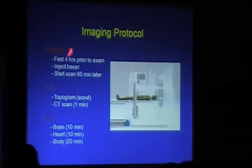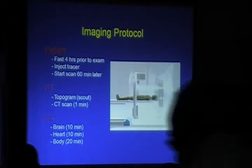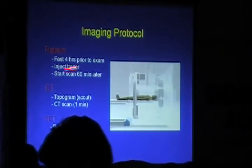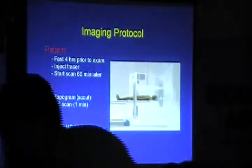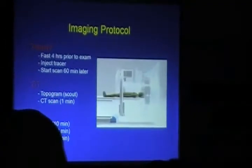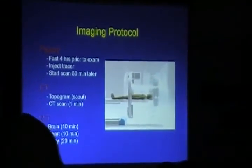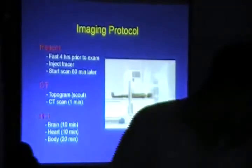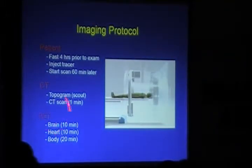The imaging protocol: the patient has to fast. I generally recommend overnight fast, but we can even fast the patient for four hours. We inject the tracer and wait 45 to 60 minutes for the medicine to get localized in the tumor. Then we run a topogram, a scout topogram, and a CT scan. A 64-slice CT finishes in less than one minute. The PET scan takes approximately 20 minutes for whole body, 10 minutes for the heart, and 10 minutes for the brain. Overall, the whole procedure is over in around 25 minutes.